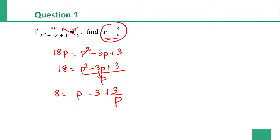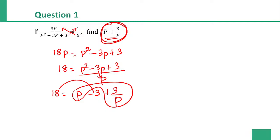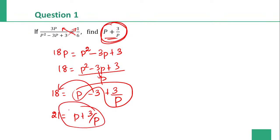So we need the value of p plus 3 by p. Moving minus 3 to the other side gives plus 3. Therefore 18 plus 3 is 21. So p plus 3 by p is equal to 21. That is the right answer.